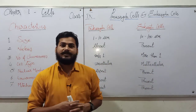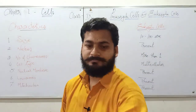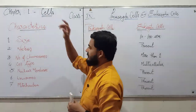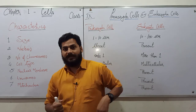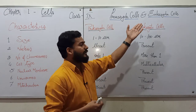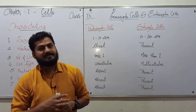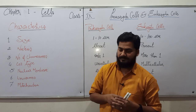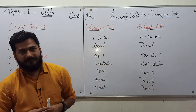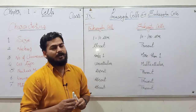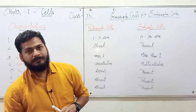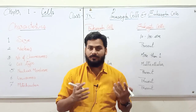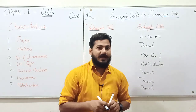Good morning class, I'm Durgesh Prasad and today we are going to talk about class 9th chapter 1, Cells. The topic today we are going to cover is prokaryotic and eukaryotic cells. In the last lectures: the first lecture we talked about introduction to the cell, second we talked about cell size, third we talked about presence of cell or the types of cell on the basis of location — plant cell and animal cell.